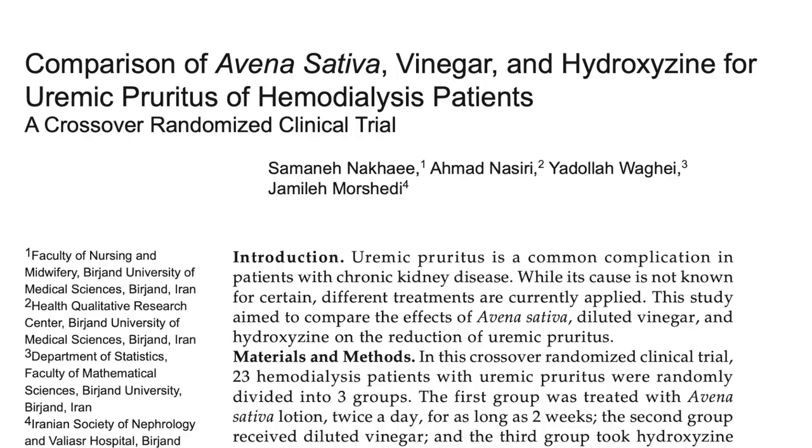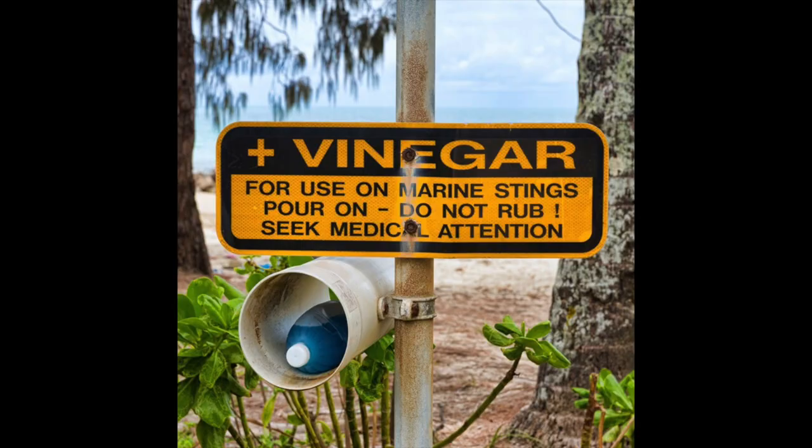Uremic pruritus can be a very disturbing symptom in patients with chronic renal failure, especially those on dialysis. A 5% white vinegar solution applied to the pruritic areas twice daily for 2 weeks considerably reduced the intensity of pruritus. After jellyfish stings, prompt removal of the tentacles followed by the application of undiluted vinegar can prevent the release of toxins which produce local pain, redness, edema, and in some cases even renal failure and cardiac failure.